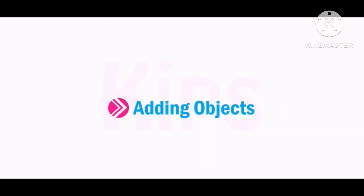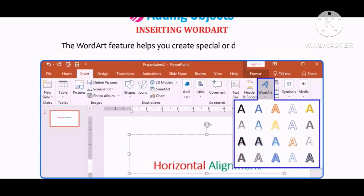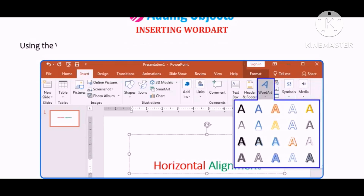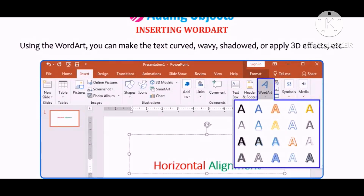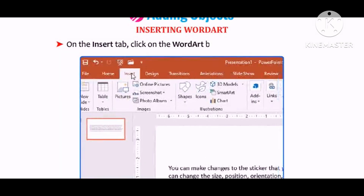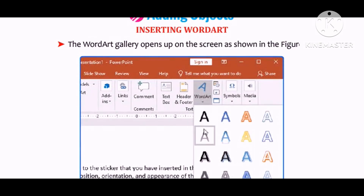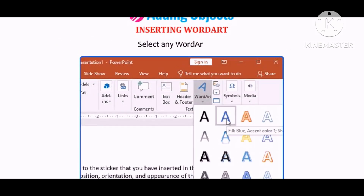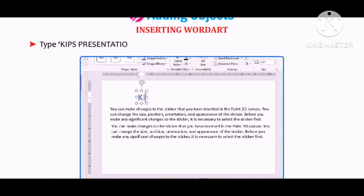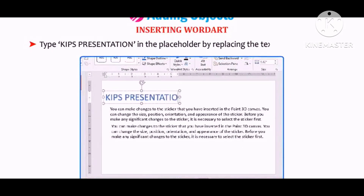Now let me tell you how to insert objects in a slide. You can add different objects to enhance its look and feel. The WordArt feature helps you to create special or decorative text, giving a unique look. Using WordArt, you can make text curved, wavy, shadowed, or apply 3D effects. On the Insert tab, click on the WordArt button in the Text group. The WordArt Gallery opens. Select any WordArt style and type your text in the placeholder.